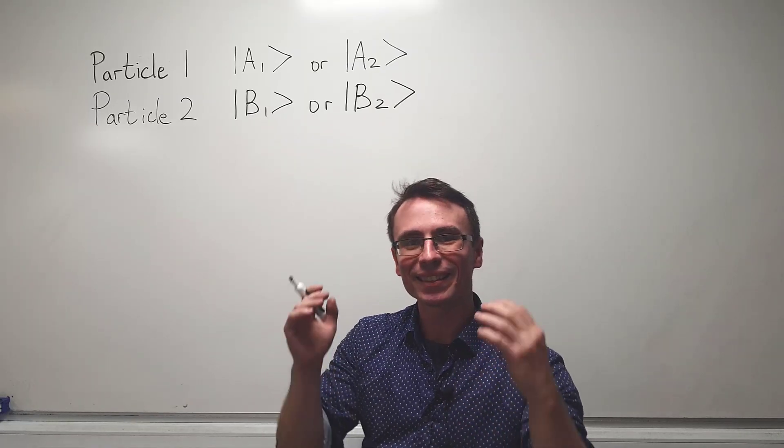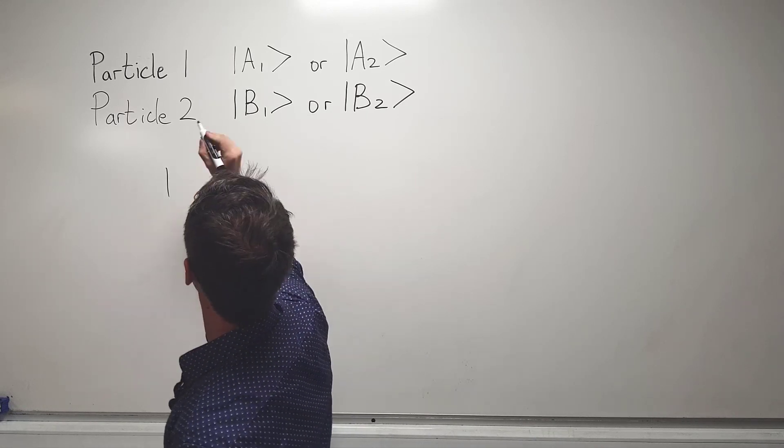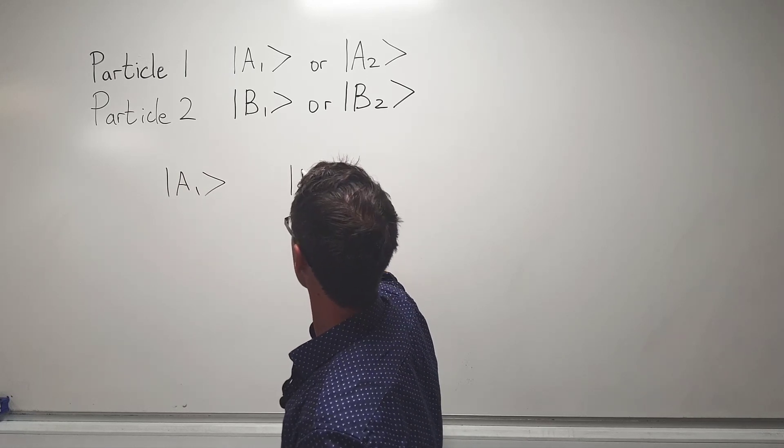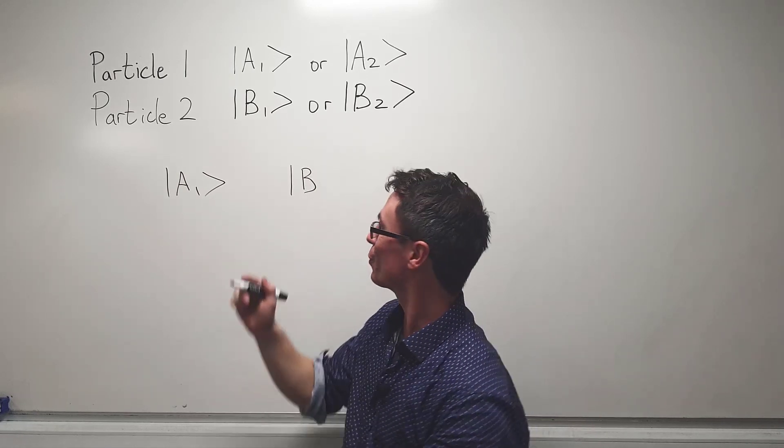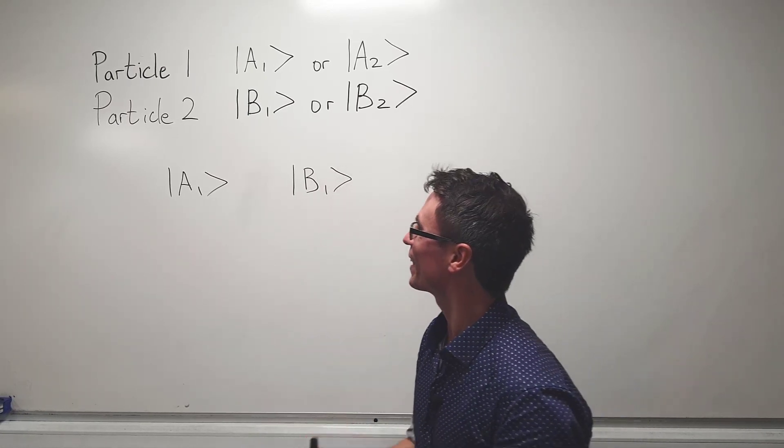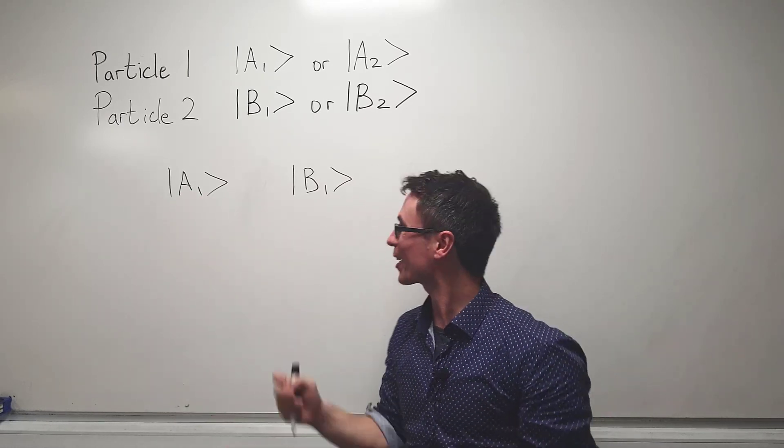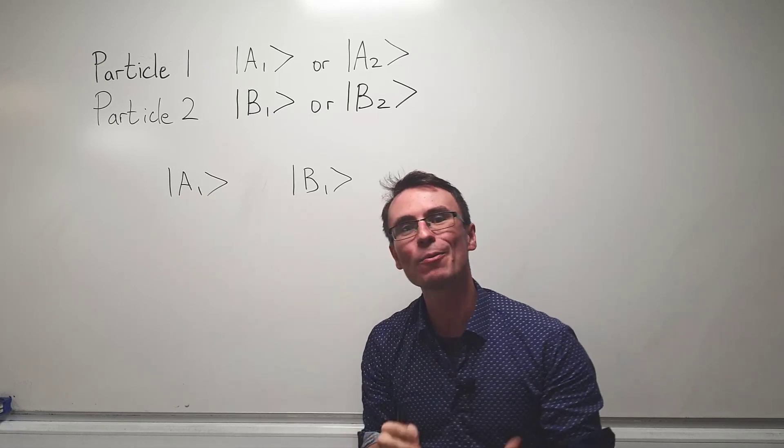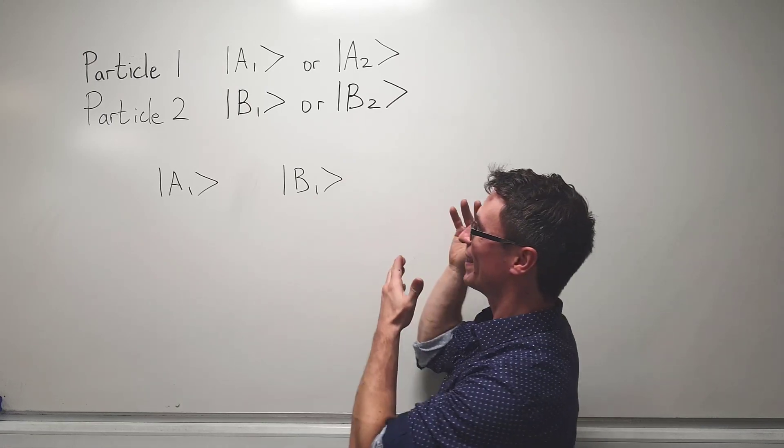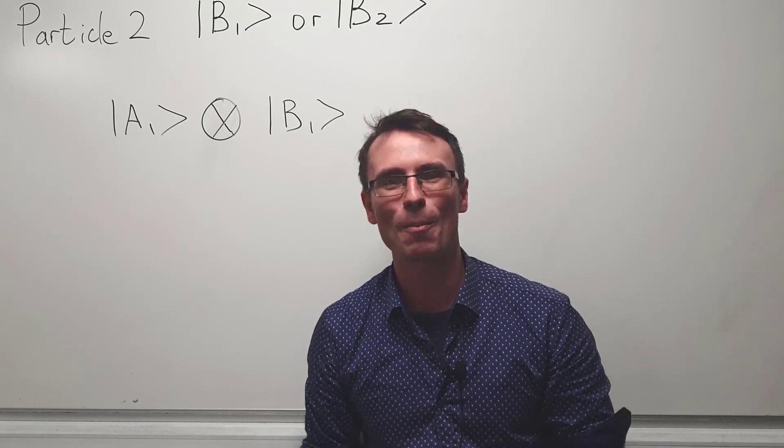If we're looking at the system as a whole, we could say that particle one could be in state a one and particle two being in state b one. In a combined system we can think of particle one being in state a one and particle b being in state b one. In quantum mechanics we have a cool symbol to represent this and this is the tensor product. You can think of it as a way of multiplying these complex vectors.